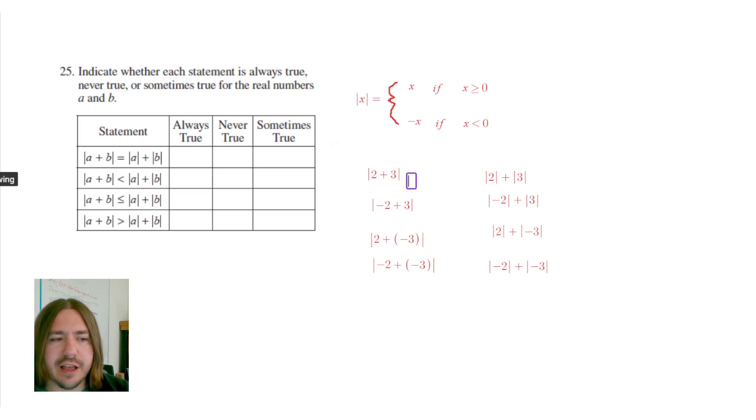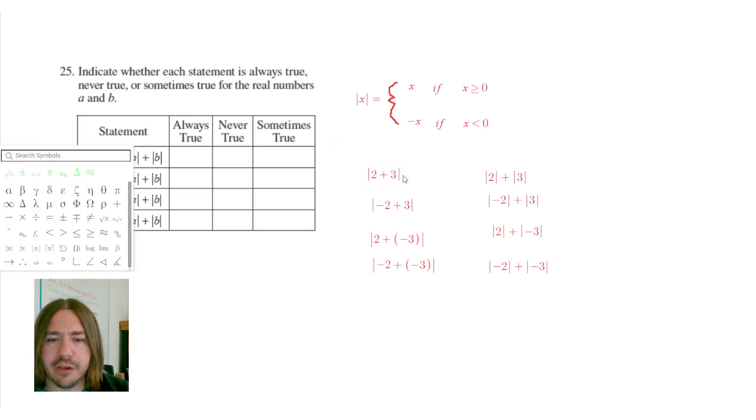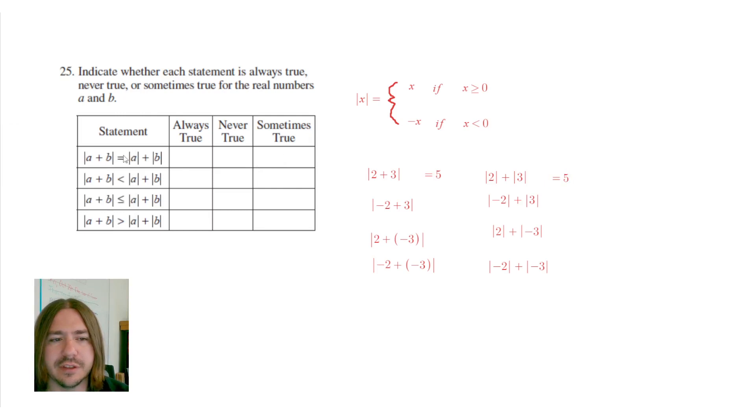So if we just have the absolute value of 3 plus 2, this would equal the absolute value of 5, which would just be 5. Now if I take the absolute value of these numbers separately, we just get 2 plus 3, which is also 5. So at least sometimes this is true. We're going to check to see if it's always true or not, but it's definitely not going to be never true.